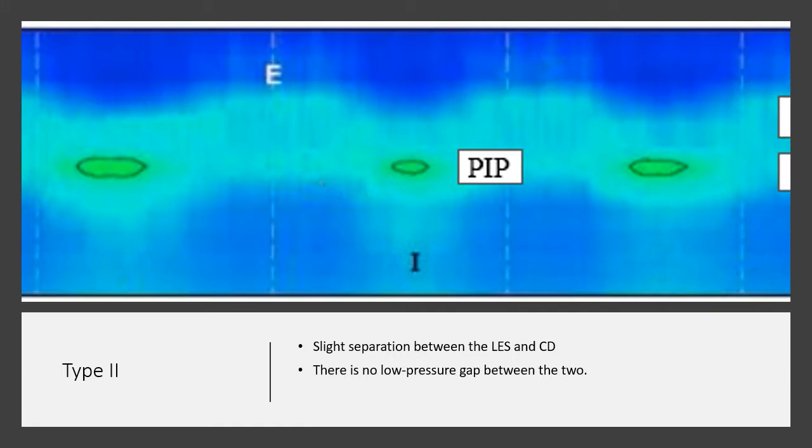In a type 2 esophagogastric junction, there is a slight separation between the lower esophageal sphincter and the crural diaphragm. There is, however, no low pressure gap between these two.